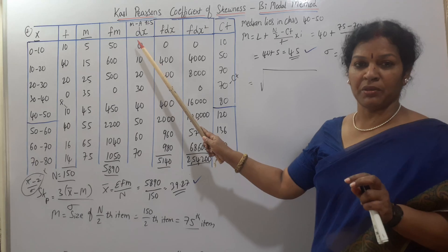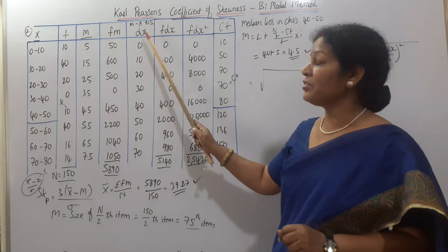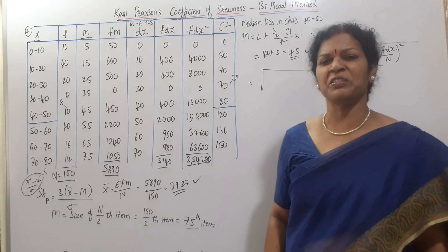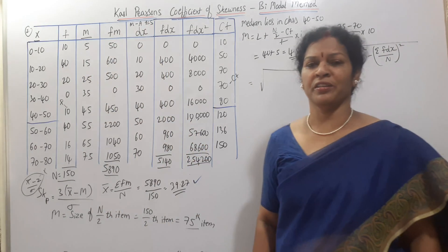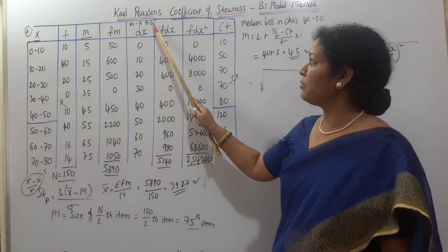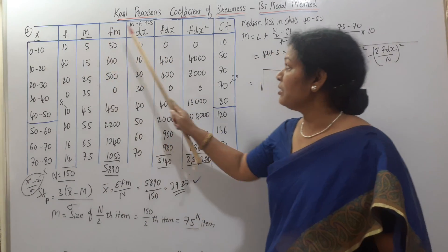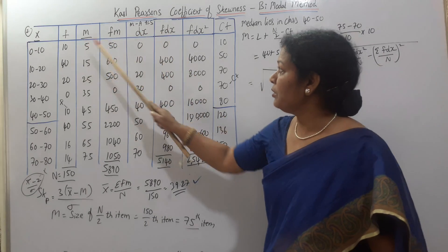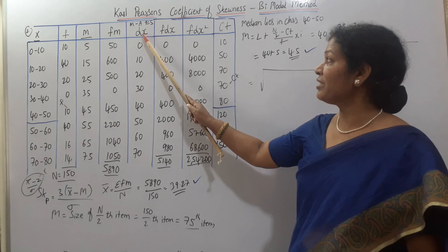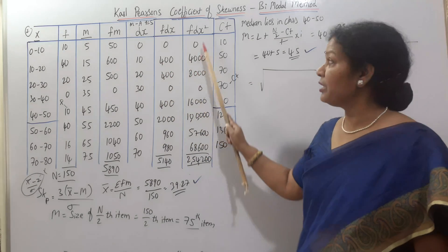For standard deviation, we set up columns: dx, fdx, and fdx². Here dx equals M minus A, where A is the assumed mean. For example: 5 minus 5 equals 0; 15 minus 5 equals 10; 25 minus 5 equals 20; 35 minus 5 equals 30. Then fdx equals frequency into dx: 10 into 0 equals 0; 40 into 10 equals 400; 20 into 20 equals 400. Then fdx² is: 0 into 0 equals 0; 10 into 400 equals 4000; 20 into 400 equals 8000.